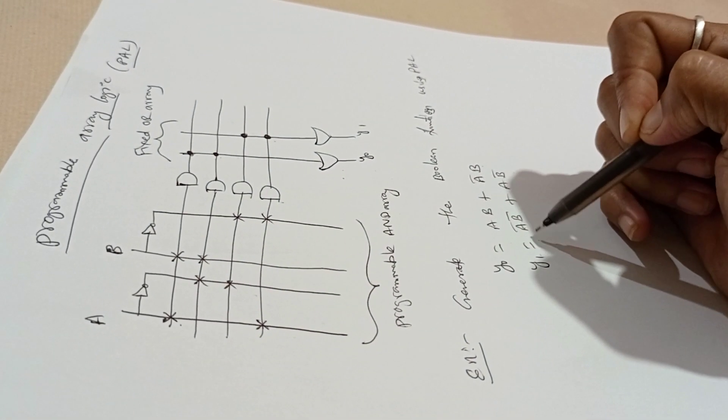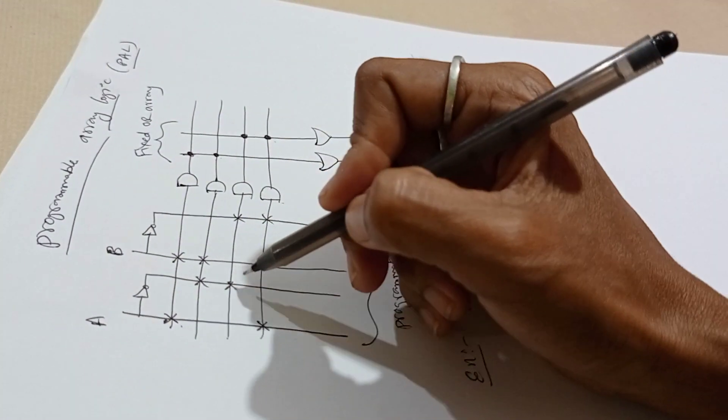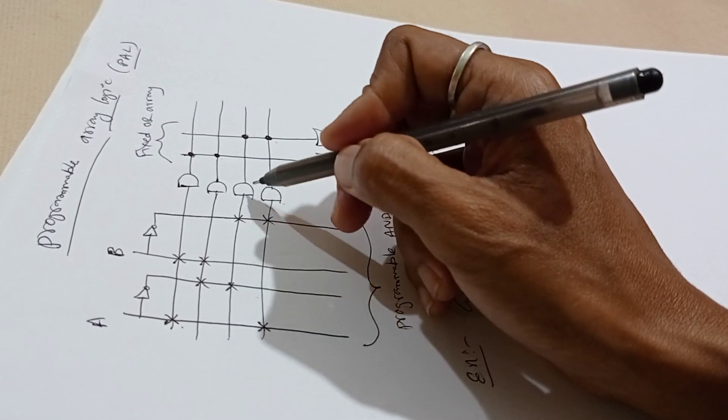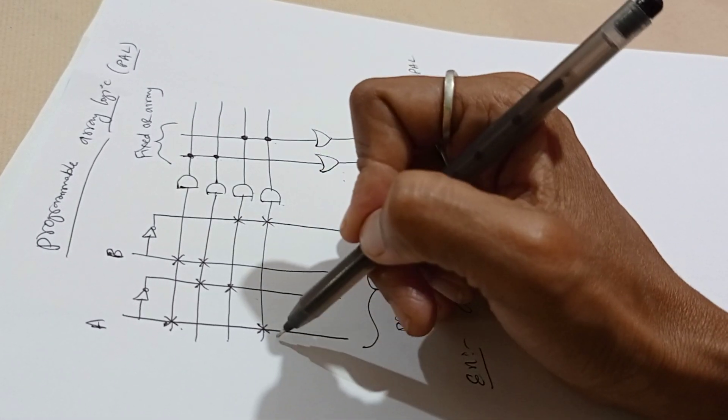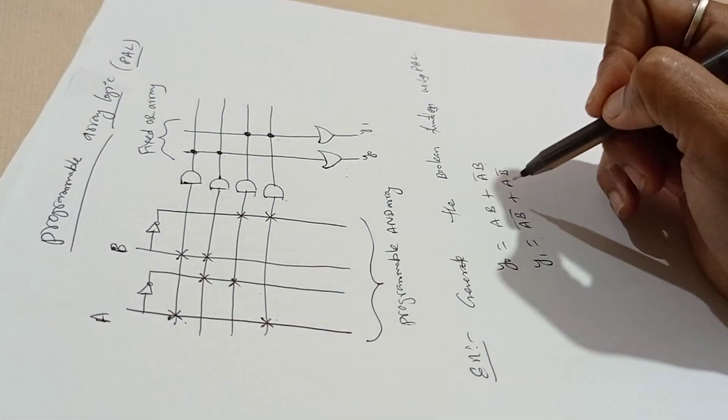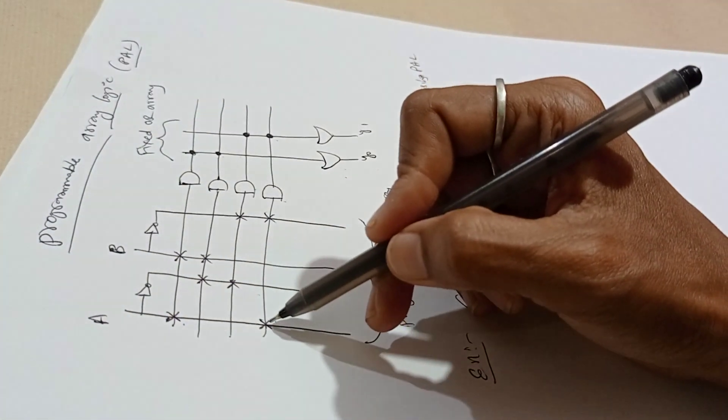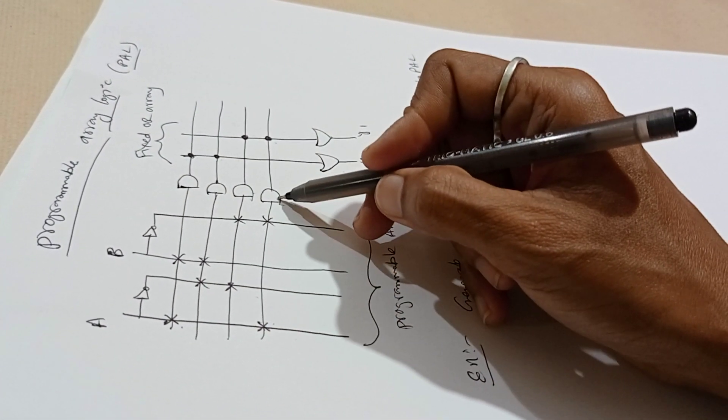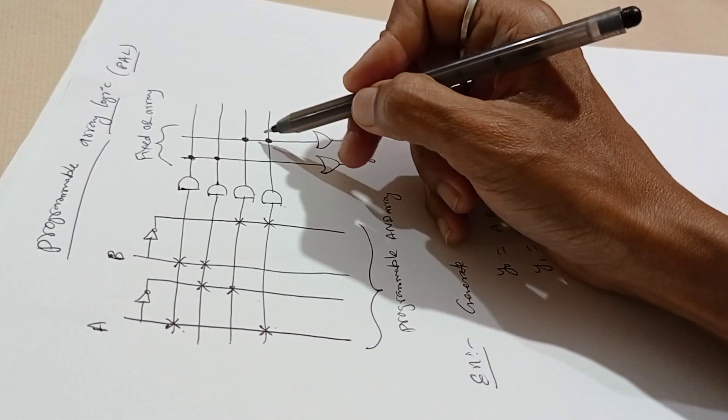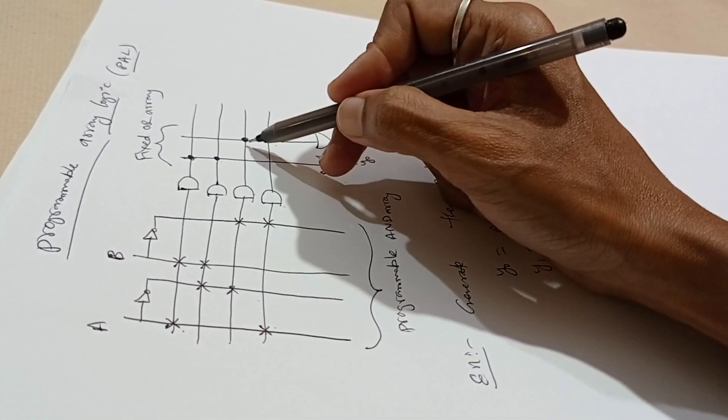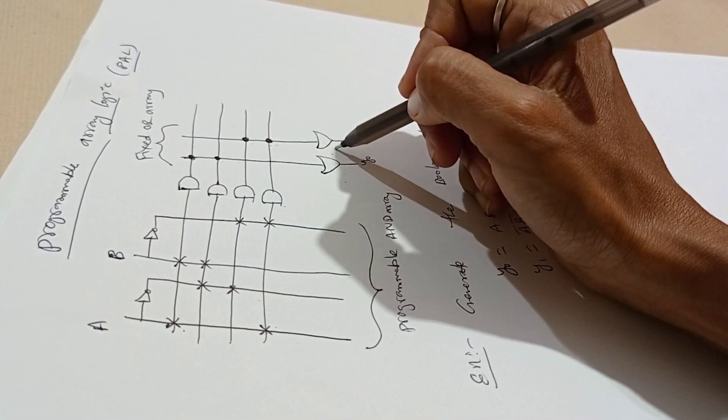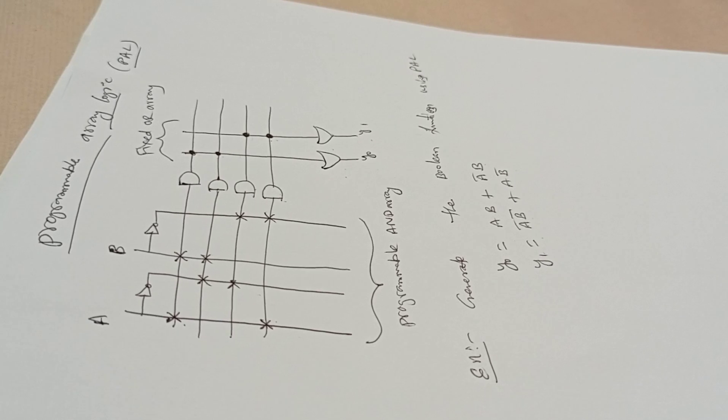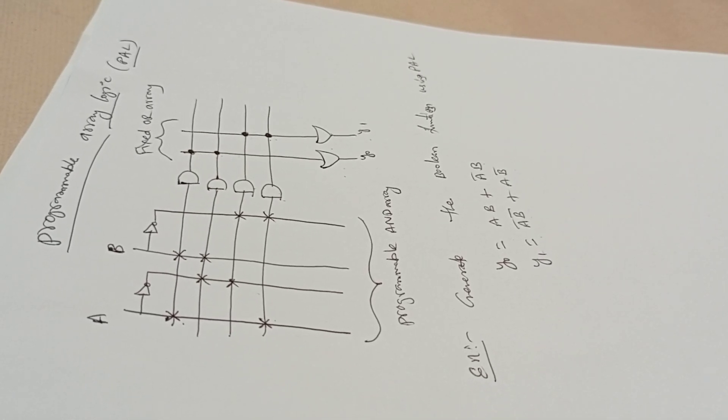Same for Y1, A bar B bar. Take a connection from A bar and B bar and connect to AND gate. Next one, plus AB bar. Cross from A and B bar, connect to AND gate. Now take a fixed connection to OR gate with dot symbol and this becomes Y1. This is how to design the programmable array logic.